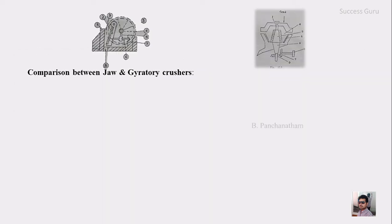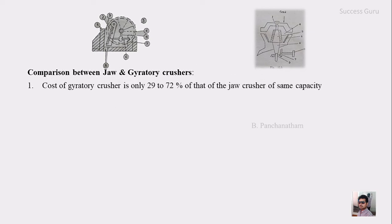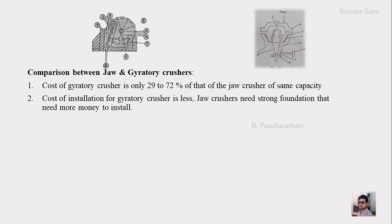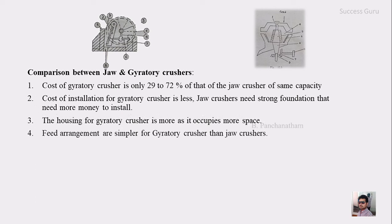Now we will see the comparison between the Jaw Crusher and the Gyratory Crusher. The cost of the Gyratory Crusher is much lesser — 29 to 72 percent less — than a Jaw Crusher of the same capacity. The installation cost for the Gyratory Crusher is also less, as the Jaw Crusher requires a strong and costly foundation. However, the housing for the Gyratory Crusher is larger since the machine itself is very big in size and occupies more space.